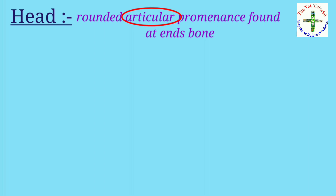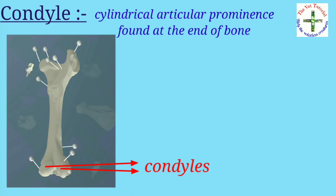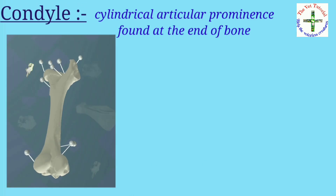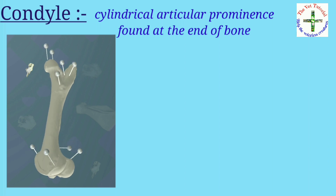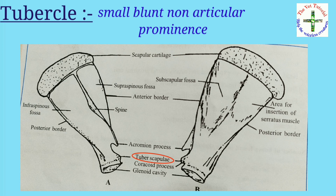Then condyle — it is a cylindrical articular prominence found at the end of the bone. Example: found in humerus and femur. Then tubercle — it is a small blunt non-articular prominence. Example: found in scapula and humerus.